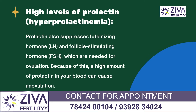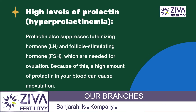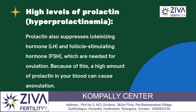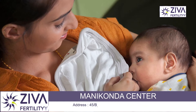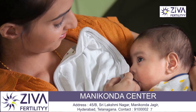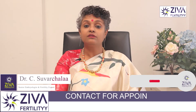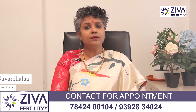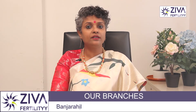When there are higher levels of prolactin — also called hyperprolactinemia — it can also lead to anovulation. Prolactin is a hormone released by your pituitary gland, mainly known for stimulating breast milk production, also called lactation. Prolactin suppresses LH and FSH, which are needed for ovulation. Because of this, high amounts of prolactin in your blood can cause anovulation.